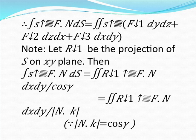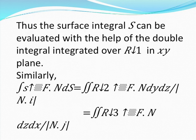Note: let r1 be the projection of s on the xy plane. Then the integral over s of f·n ds equals the double integral over region r1 of f·n dx dy divided by cos γ, which equals the double integral over r1 of f·n dx dy divided by mod(n·k). Similarly, the integral over s of f dot ds equals the double integral over region r2 of f·n dy dz divided by mod(n·i), and the double integral over region r3 of f·n dz dx divided by mod(n·j).